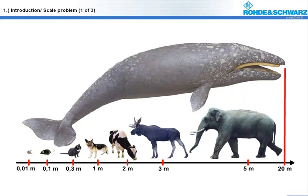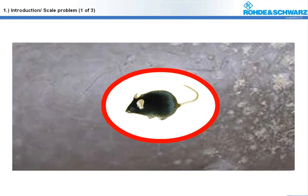Look at the graphics. If you select a good resolution for displaying the whale, you can hardly see animals smaller than a mouse. But if you select a good resolution for the mouse, only a small section of the whale can be displayed.